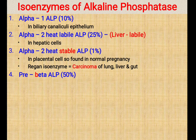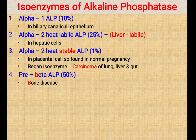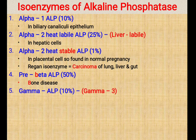So that's Alpha-1 ALP, Alpha-2 heat labile, and Alpha-2 heat stable. The fourth isoenzyme of alkaline phosphatase is pre-beta ALP, which constitutes the major part — 50% of the total alkaline phosphatase in the blood. This 50% is produced by the bone. Bone predominantly produces alkaline phosphatase and it plays a very important role in bone remodeling, where osteoblast and osteoclast activity are involved. This bone-derived ALP is classified as the pre-beta type.